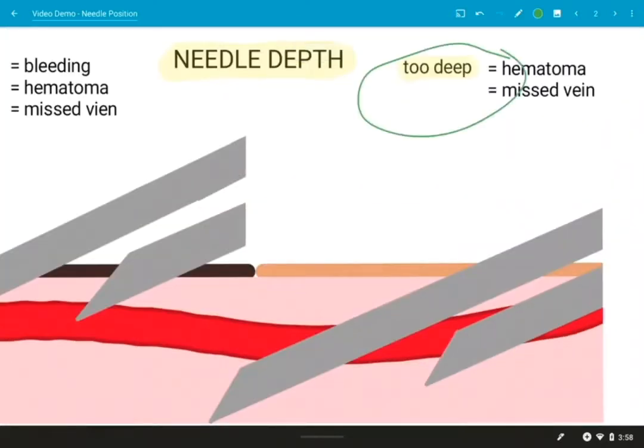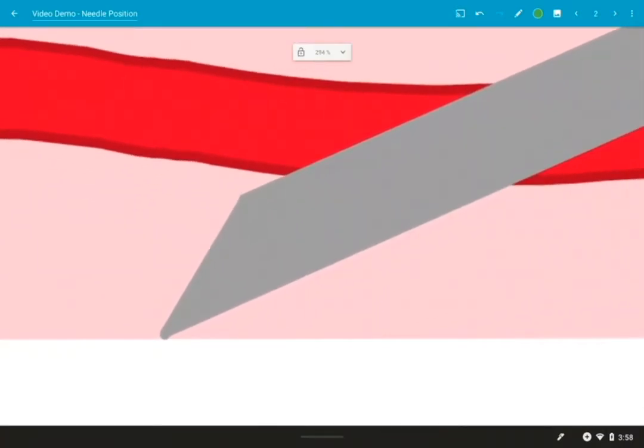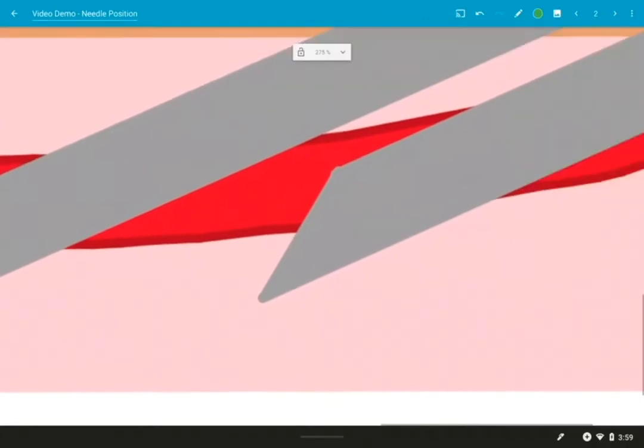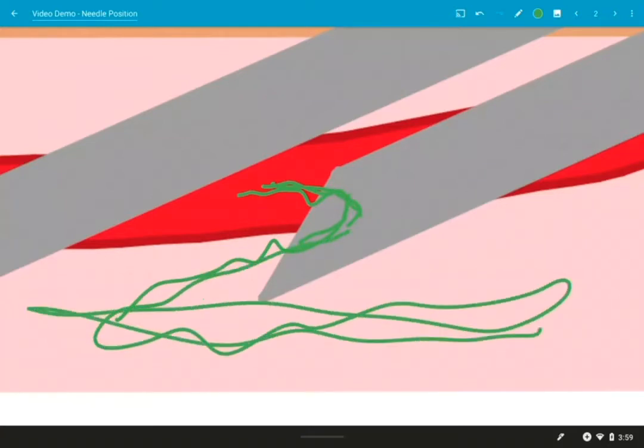All right. And if you enter too deeply, you can cause a hematoma and a missed vein. You'll miss your vein if you go completely through the vessel because there's just no opening right here for the blood to go into. If you go in a little bit less deep, but still too deep, you're going to have part of your bevel in the vein, part of your bevel in the tissue. And just like the too shallow example, it will flow into the bevel and out into the tissue and cause a deeper bruise.